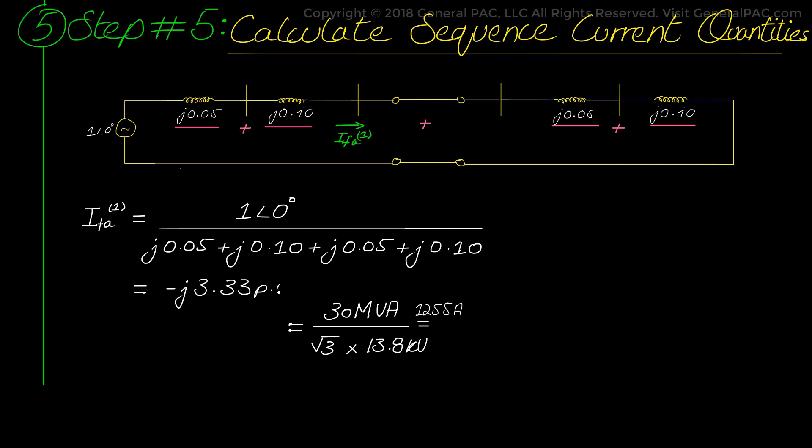Now we must calculate the current value in amperes. So, first we take the base value of power which is 30 MVA divided by the base value of the voltage at the faulted end, 13.8 kV which gives us the base value of current at 1255 amperes. Multiply that base value of 1255 amperes by the per unit and we actually get the ampere current that is flowing through the positive sequence network. And that is 4184 at negative 90 degrees.